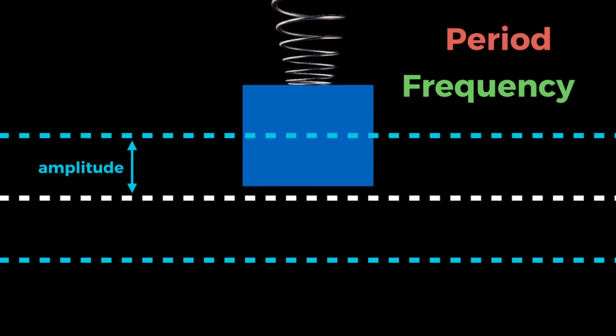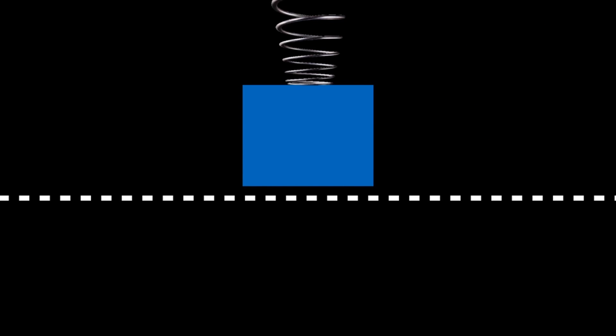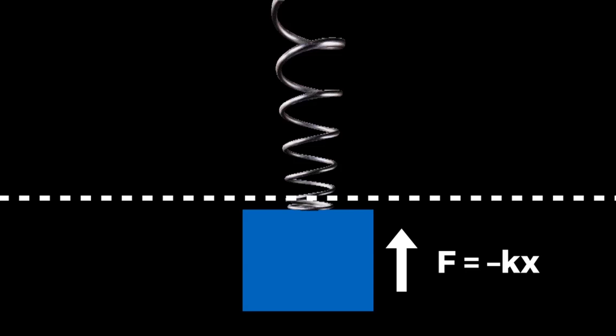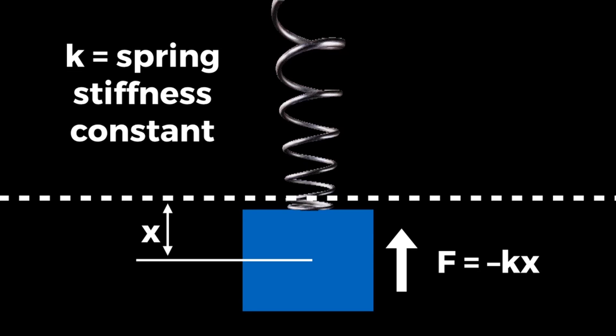If the object is above the equilibrium position, there will always be a force trying to bring it back down. If the object is below the equilibrium position, a force will always be trying to push it back up. This force that's always trying to move an object back to equilibrium is known as a restoring force, and it is proportional to the distance from equilibrium. It can be expressed with the formula F equals negative kx, where x is the distance from equilibrium and k is the spring stiffness constant.